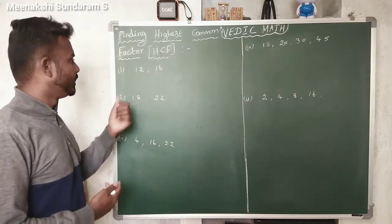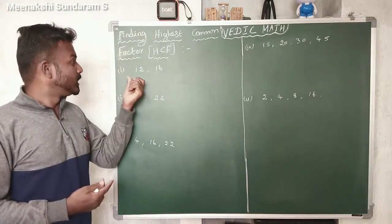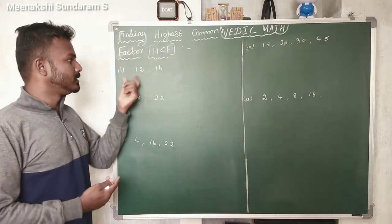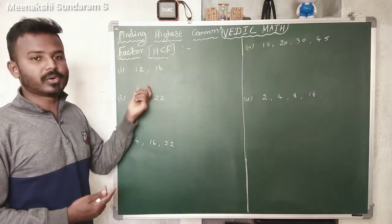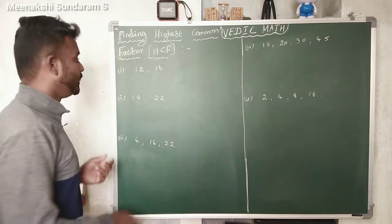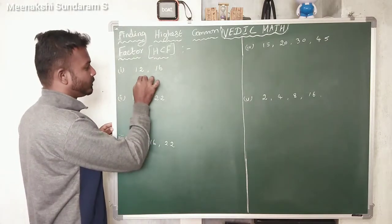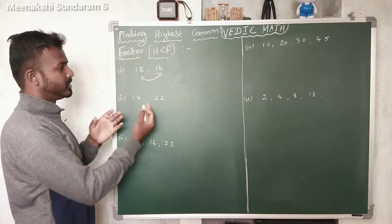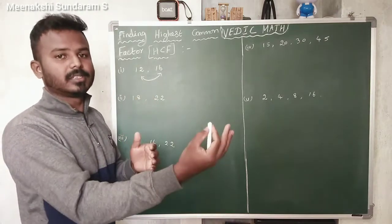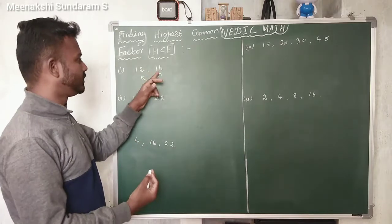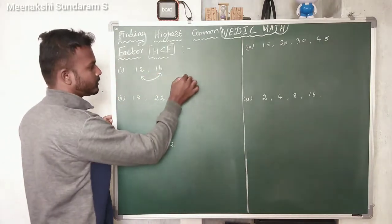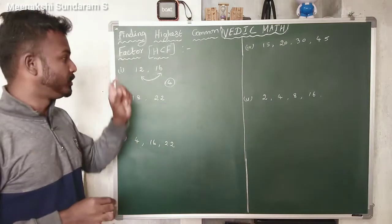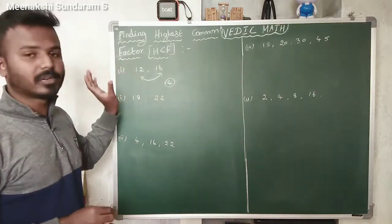We can go to the problem. First problem: the numbers are 12 and 16. We need to find the HCF of 12 and 16. It is very easy. First, find the difference of these two numbers. Difference means the largest number minus the lowest number. So 16 minus 12 equals 4. The difference of the numbers is 4. First, you should find the difference of the given numbers.